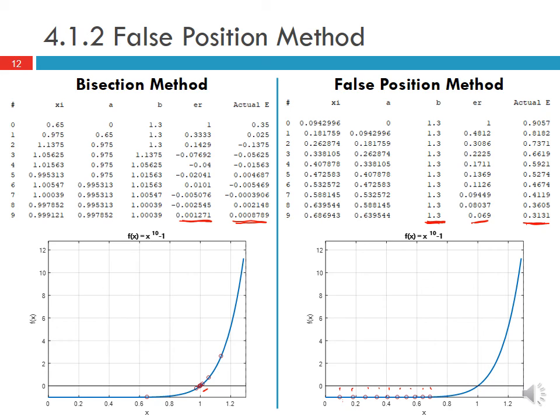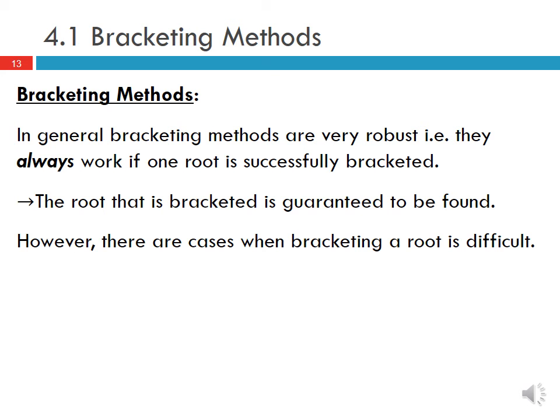In general, bracketing methods are very robust. They always work if one root is successfully bracketed. Basically this means that the root that is bracketed is guaranteed to be found. However, there are cases when bracketing a root is difficult.